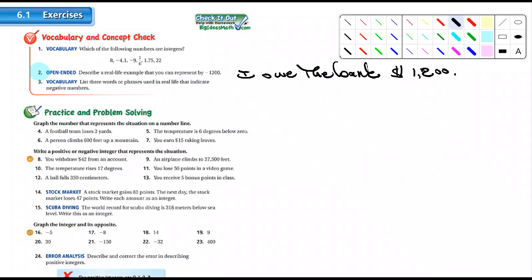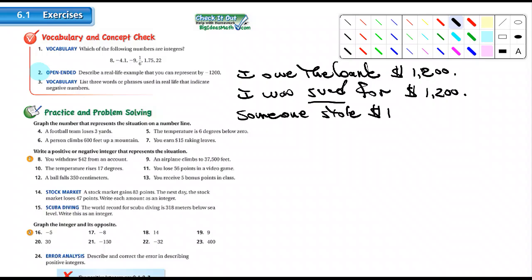Yeah. I was sued for $1,200. I was sued. How do you spell sued? S-U-E-D. Is that right? Does that look right? Okay. Sued for $1,200. Okay. 20 points. What's another one? Yeah. Someone stole $1,200. Someone stole $1,200 from me. 20 points. Nicely done. Okay. All right. So there's number 2 is done for you. There's all kinds of choices, or you can come up with your own.